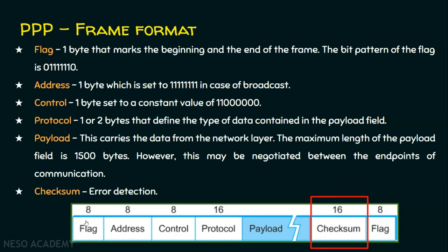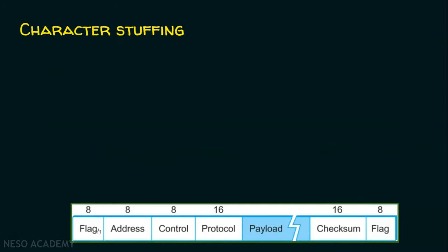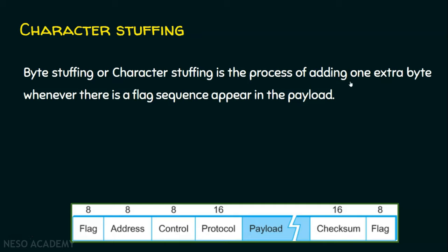There is a problem: the flag sequence — zero, six ones, zero — that marks the beginning and ending of a frame can also appear in the data part of the payload. To handle this, PPP uses character stuffing, or byte stuffing, since PPP is a byte-oriented protocol. Byte stuffing is the process of adding one extra byte whenever the flag sequence appears in the payload. This extra byte enables the receiver to understand that the sequence is not the ending flag, allowing the receiver to reconstruct the frame correctly by removing the extra byte — exactly as the sender originally created it.